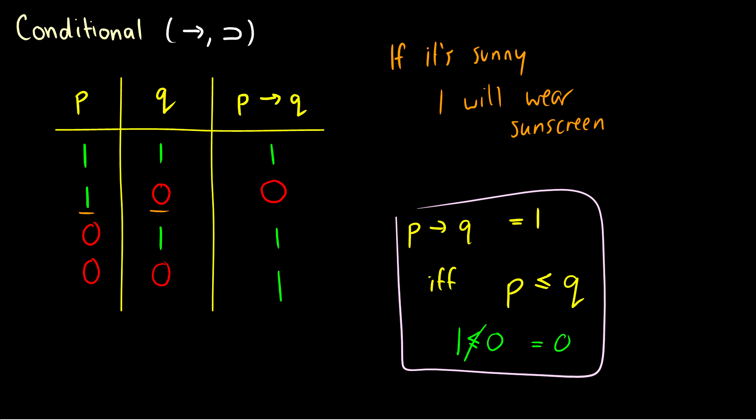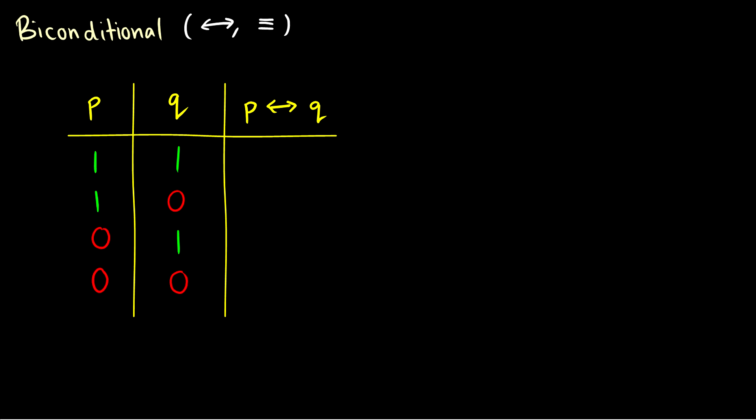So those are the four main connectives and their truth tables. But there's two more connectives that we can define in terms of the other connectives, but let's just treat them as if they're their own connective for now.